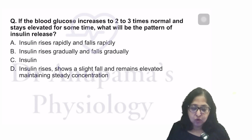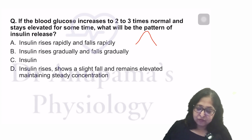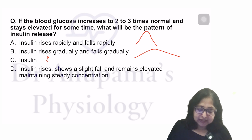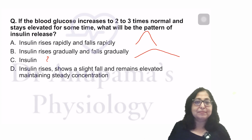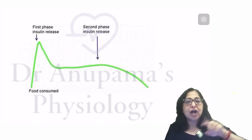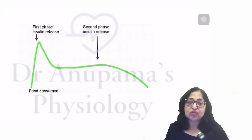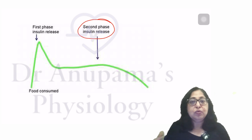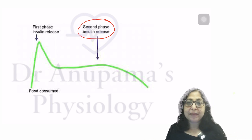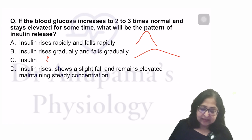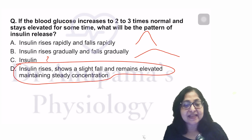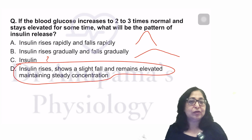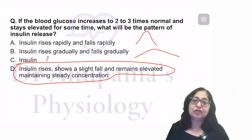If blood glucose increases two to three times normal and stays elevated for some time, what will be the pattern of insulin release? There is an initial sharp rise in insulin — this is insulin already synthesized and stored in vesicles. The second phase of insulin release involves newly synthesized insulin. The pattern is: insulin rises, shows a slight fall, then remains elevated maintaining a steady concentration — sustained until blood glucose remains high. Once blood glucose reduces, insulin will also reduce.